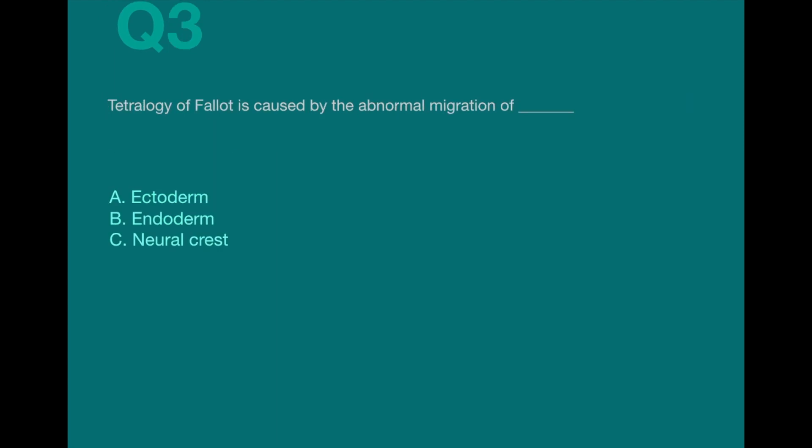Question 3. Tetralogy of Fallot is caused by the abnormal migration of a. Ectoderm b. Endoderm c. Neural crest cells. There is no explanation as this is just a fact that we have to remember from embryology.